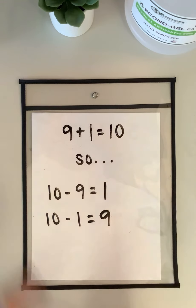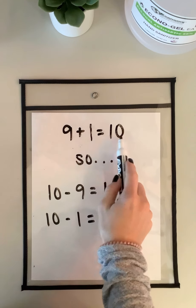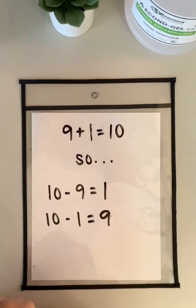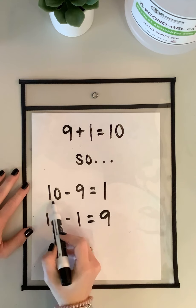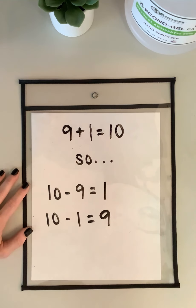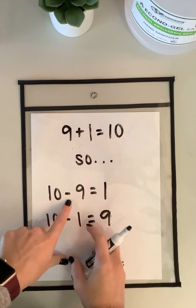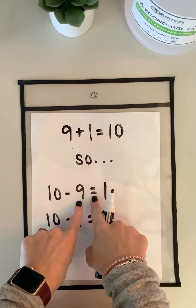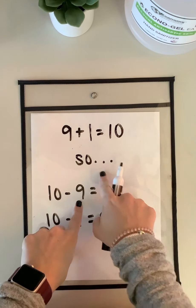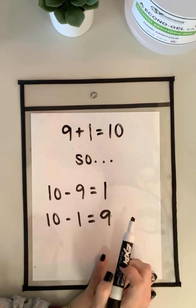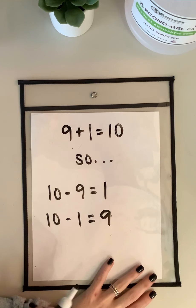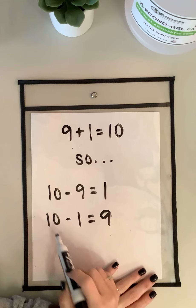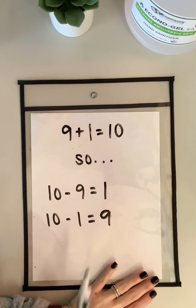Here's another example. I know that 9 plus 1 equals 10 because 9 and 1 are 10's partners. So I can use my subtraction 10 partner strategy to start with 10. Any subtraction problem that starts with 10 and you take away a one-digit number, it will equal its 10 partner. 10 minus 9 — I know that 1 is 9's 10's partner, so the answer is 1. Now I'm going to flip my one-digit numbers: instead of subtracting 9, this time I'm subtracting 1, and it equals 9.